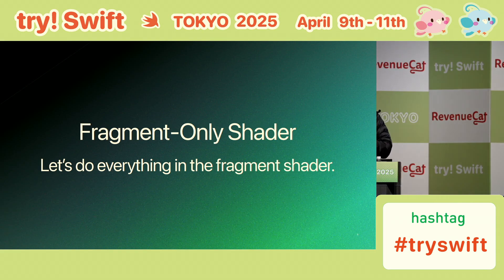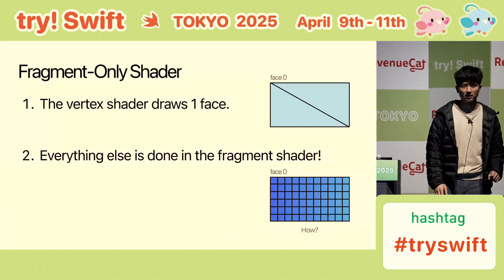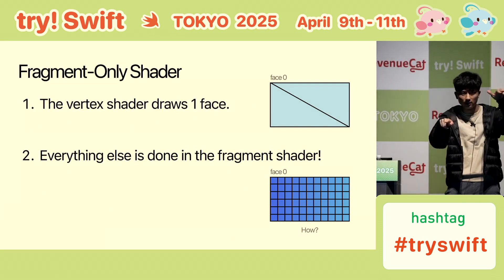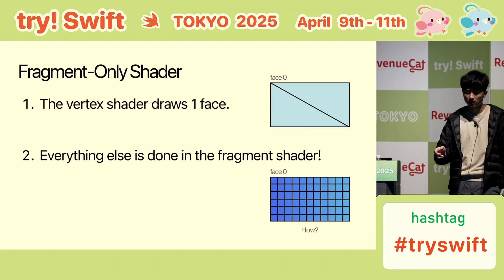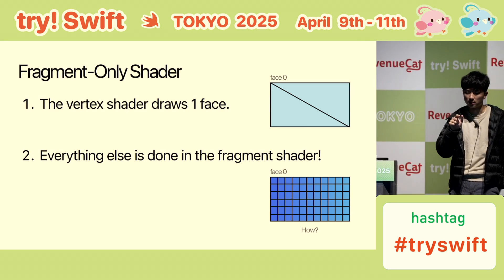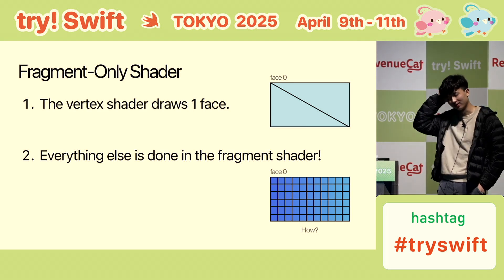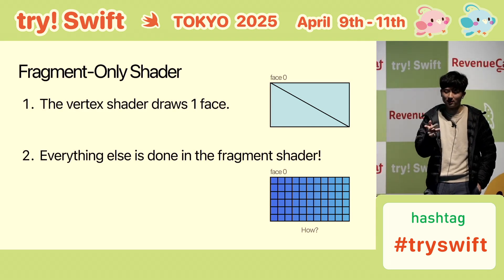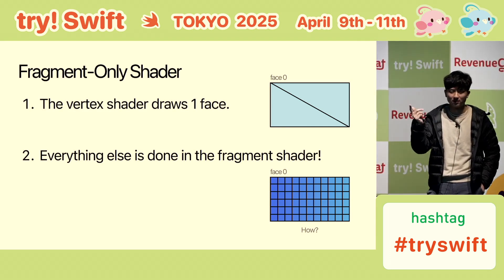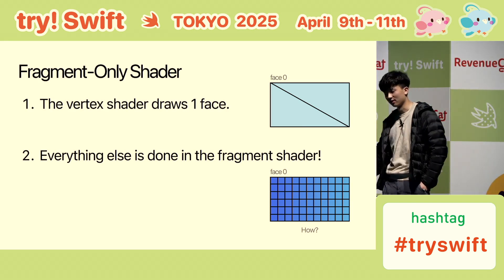With a fragment-only shader, we do everything in the fragment shader. The vertex shader draws just one face — literally just a rectangle — and then the fragment shader loops through all the pixels to give us our image. You might be thinking: how does that work? Maybe you can make it blue or red, but how do you make a 3D object? That's what we'll learn today.